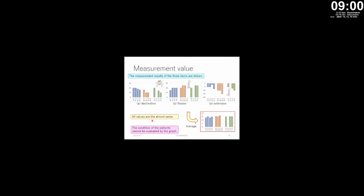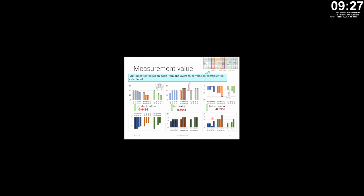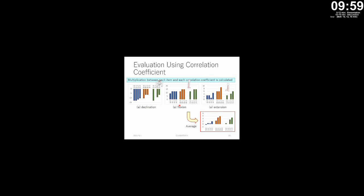I used the measurement values of those three items and averaged them. All values are almost the same, so the condition of the patient cannot be evaluated from this graph alone. Therefore, I calculated the multiplication between each item value and the average correlation coefficient. The graphs are then combined — for example, in the left graph, positive values are combined with negative values because a minus correlation coefficient is multiplied with each value. The average of these combined values is then calculated.